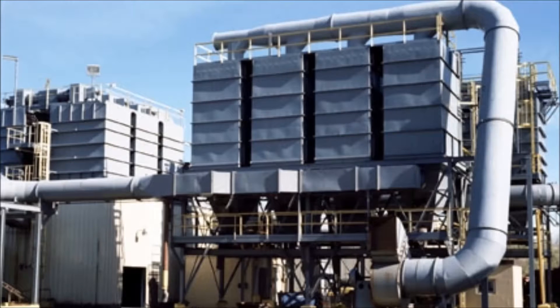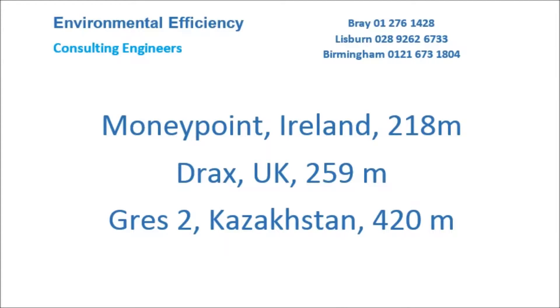So what do you do if the results of the air dispersion model are not favourable? The most sustainable approach will be to change the process. Less sustainable options include installing abatement equipment such as bag filters for particulates or scrubbers for acids or alkalis. Probably the least sustainable option is to raise the stack height, which will disperse the pollutants over a wider area. Often coal-fired power stations have some of the highest stacks.